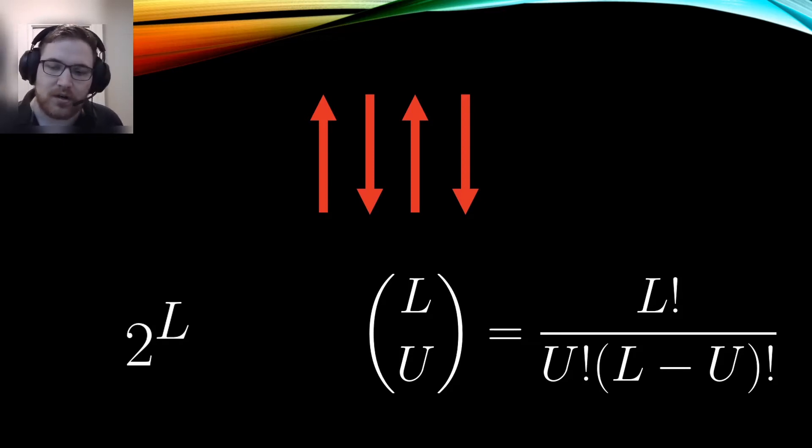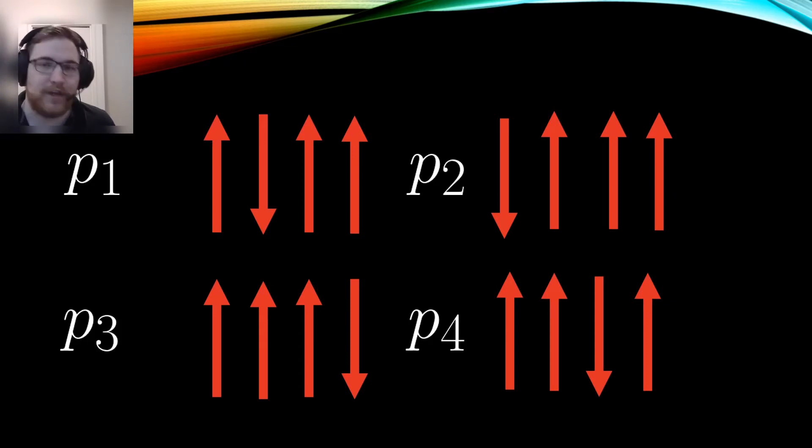we see that there are L choose U total microstates consistent with that energy. We can see here that these quantities grow quite quickly with L, outside of the trivial cases of say, all of the spins are up or all of the spins are down.